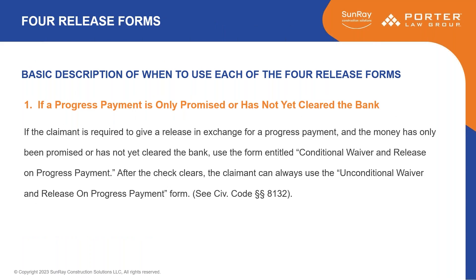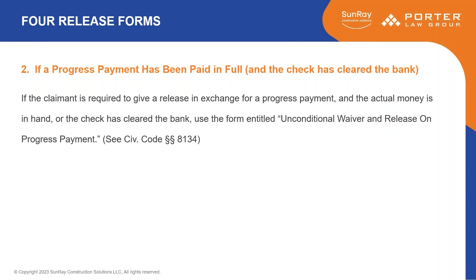Here's a basic description of when to use each of the four release forms. If it's a progress payment promised but the check hasn't cleared the bank, then you would use the form called 'Conditional Waiver and Release on Progress Payment.' After the check clears, you can then use the 'Unconditional Waiver and Release on Progress Payment,' found in Civil Code section 8132. Then if a progress payment has been paid in full and the check has cleared the bank, you'll use the unconditional waiver on progress payment, described in Civil Code section 8134.